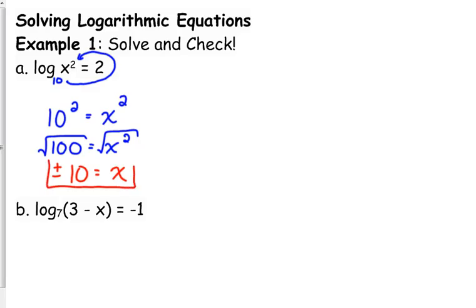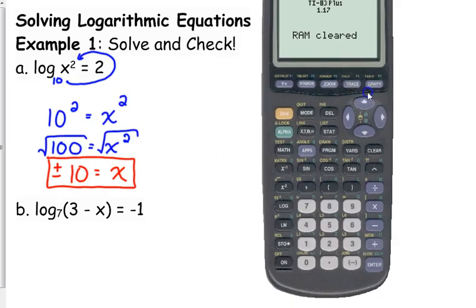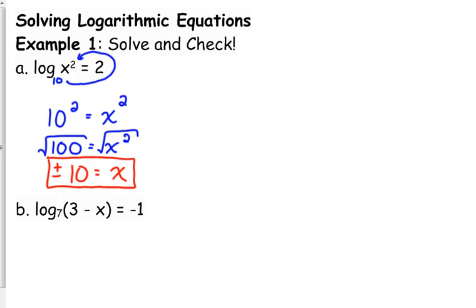Okay, positive and negative 10 are solutions here. And you can, of course, check that by plugging it into your calculator. Just remember, any time you square a negative number, you must put it in parentheses. So if I'm going to check negative 10 as a solution here, I have to add a set of parentheses. Because the log automatically has one, but I need to put an individual set around the negative 10, and that does give me an answer of 2. So positive and negative 10 are both solutions here.